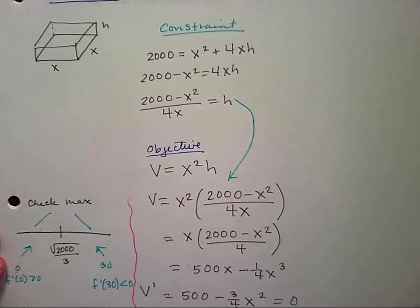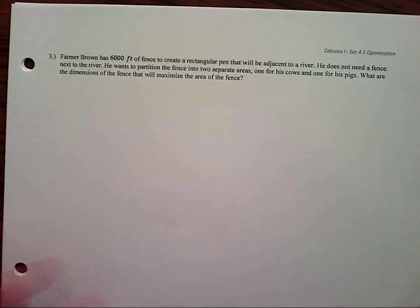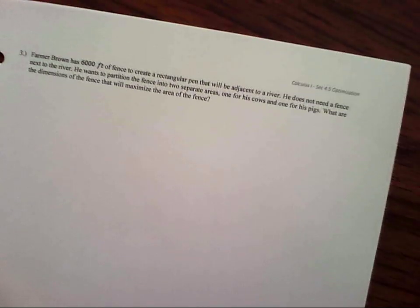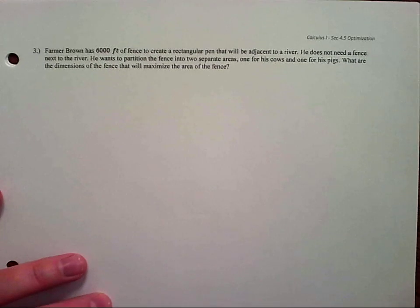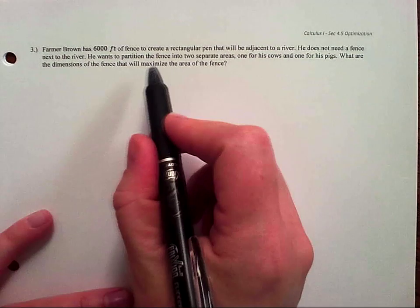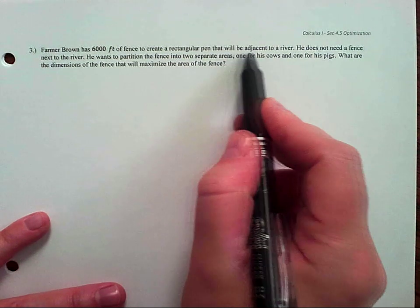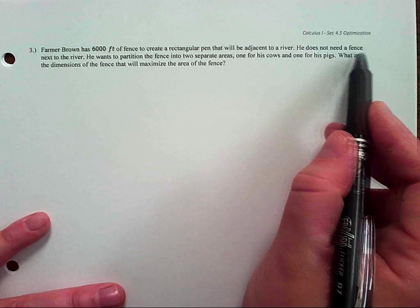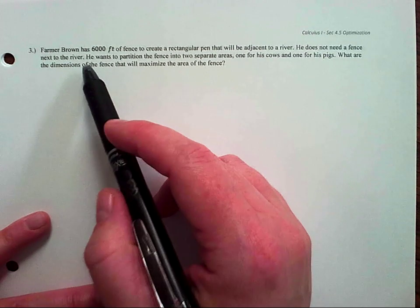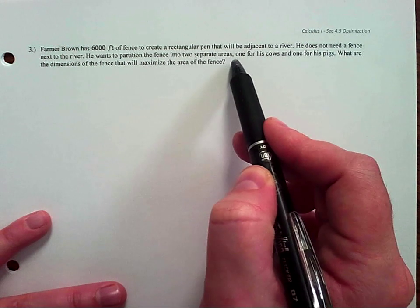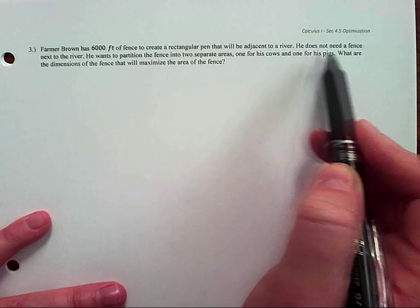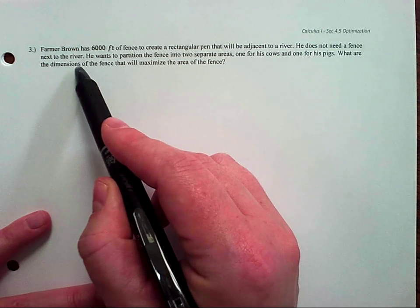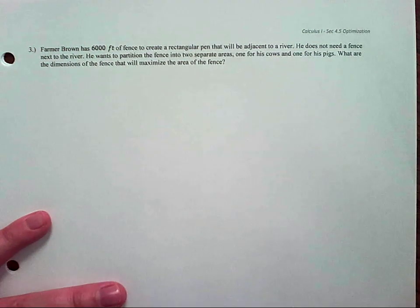We did a box problem. Let's do number three. Farmer Brown has 6,000 feet of fence to create a rectangular pen that is adjacent to a river. He does not need a fence next to the river. He wants to partition the fence into two separate areas, one for his cows and one for his pigs. What are the dimensions of the fence that will maximize the area?